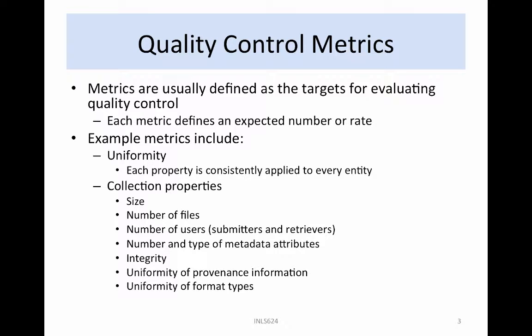Metrics are usually defined as the desired targets when evaluating quality control. Each metric defines an expected number or rate that should be met by a property. Example metrics include uniformity — where each property is consistently applied to every entity.